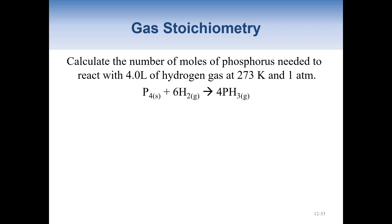Here is a sample problem: calculate the number of moles of phosphorus needed to react with four liters of hydrogen gas at 273 K and one atm. This is STP, or standard temperature and pressure. This portion of the problem is just informational to verify it's at STP. If this was given at a different temperature or pressure, then we couldn't use this method. So what we're actually doing is converting between liters of this substance to moles of that substance.